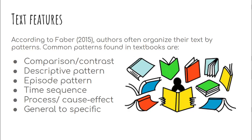According to Favor in 2015, authors often organize their text by patterns. The first pattern is comparison or contrast — when you compare, you look into the similarities of things, whereas when you contrast, you highlight the differences. You do this when you analyze or synthesize the facts or information that you get from what you read.